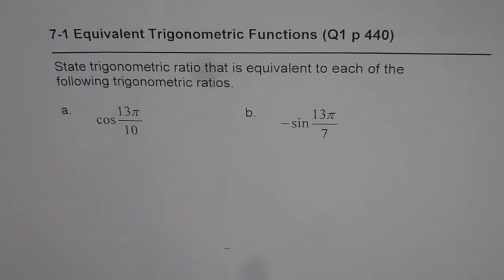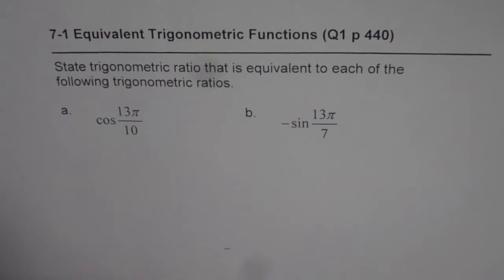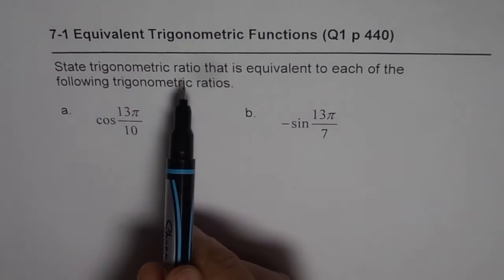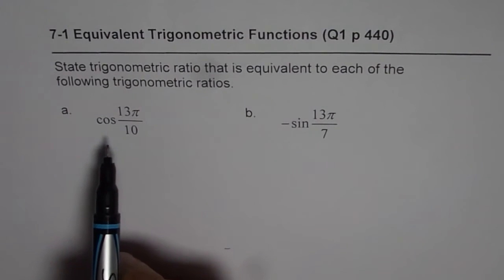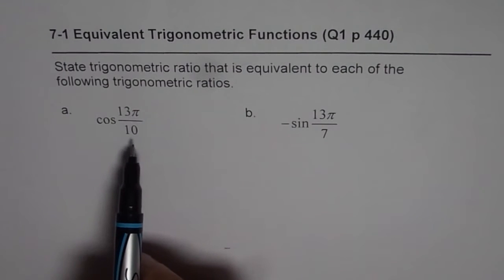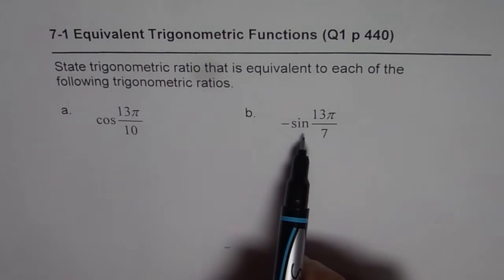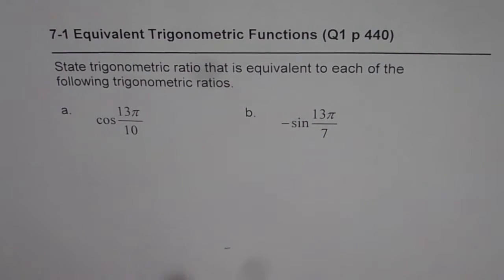It is 7.1 Equivalent Trigonometric Functions Review. The very first question here is state trigonometric ratio that is equivalent to each of the following trigonometric ratios. One is cos 13π over 10. The other one is minus sine 13π over 7. So, sometimes I have changed the values, but I have kept them same most of the time for you.